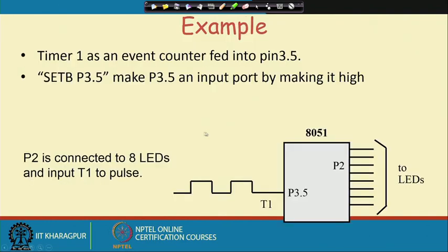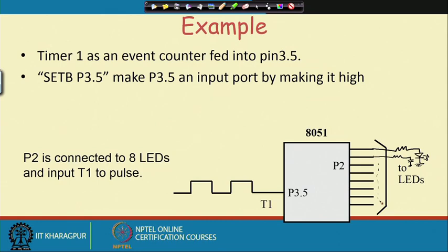We can connect a number of LEDs here. For each line, we can put a resistor then one LED. For every point we can connect one LED, so 8 such LEDs can be connected. This will give a nice display of the pattern of the number of pulses received at the T1 bit.